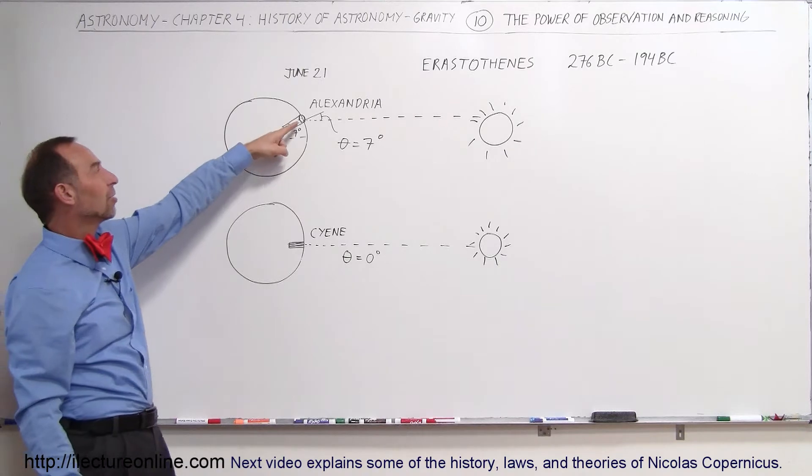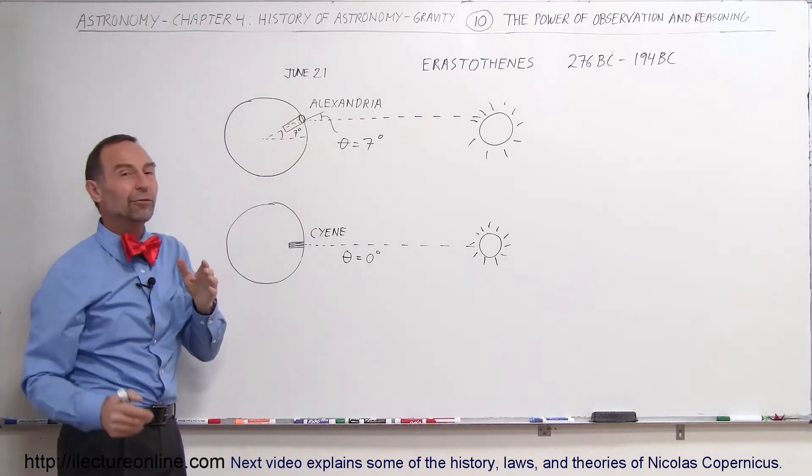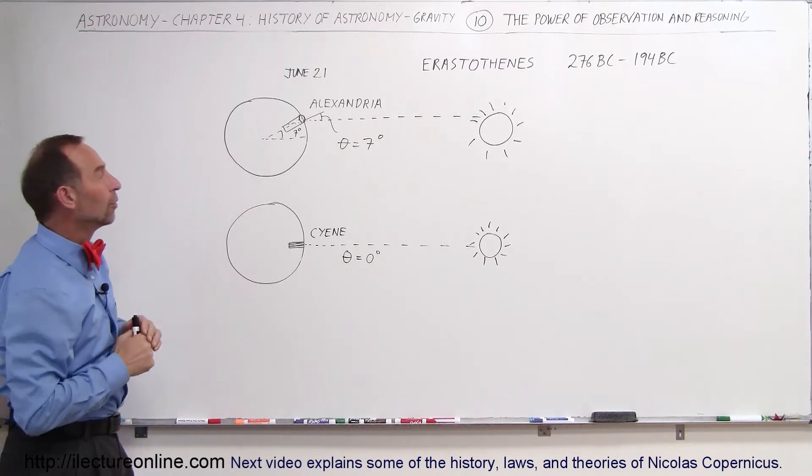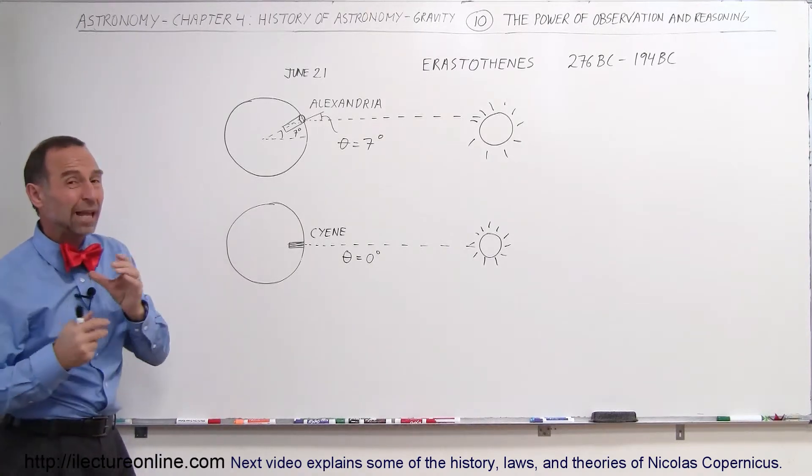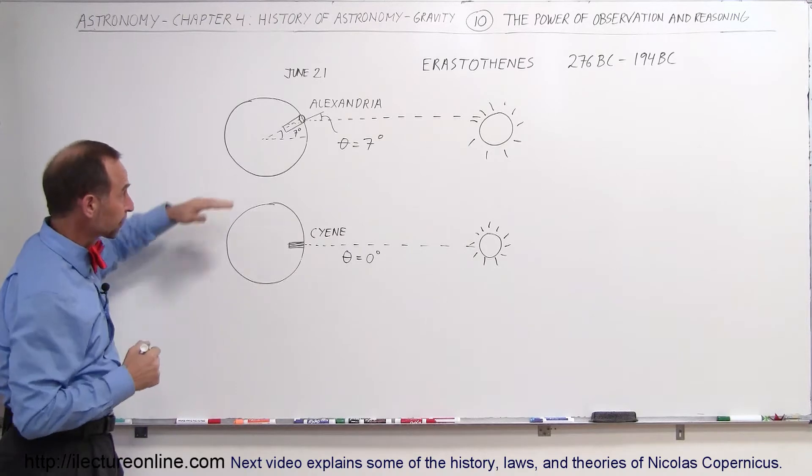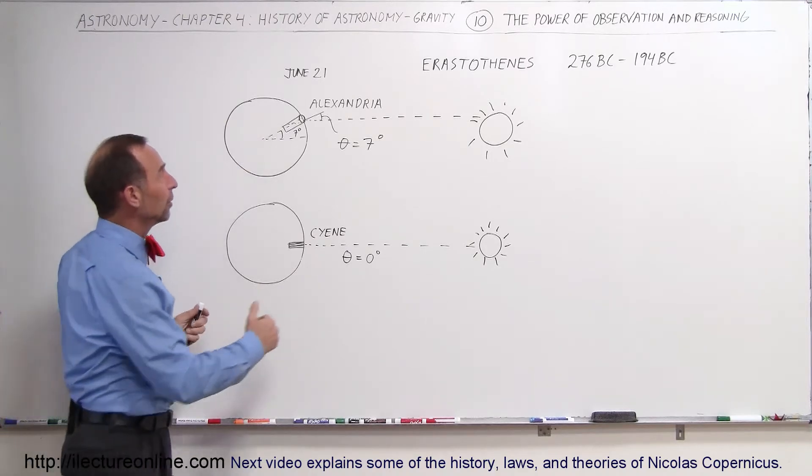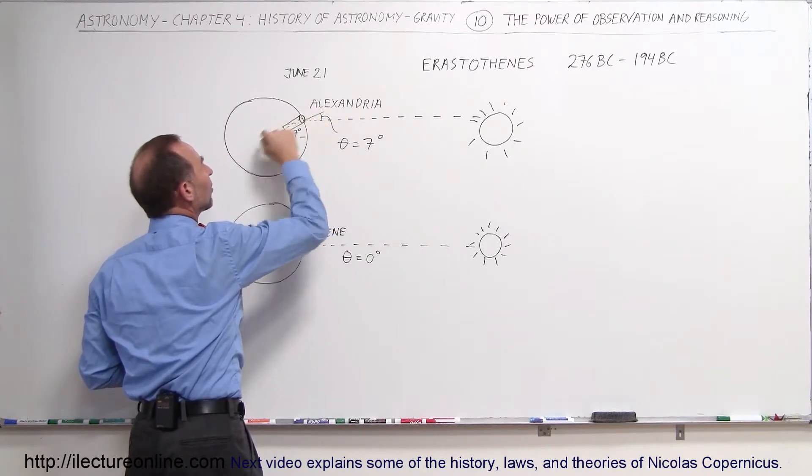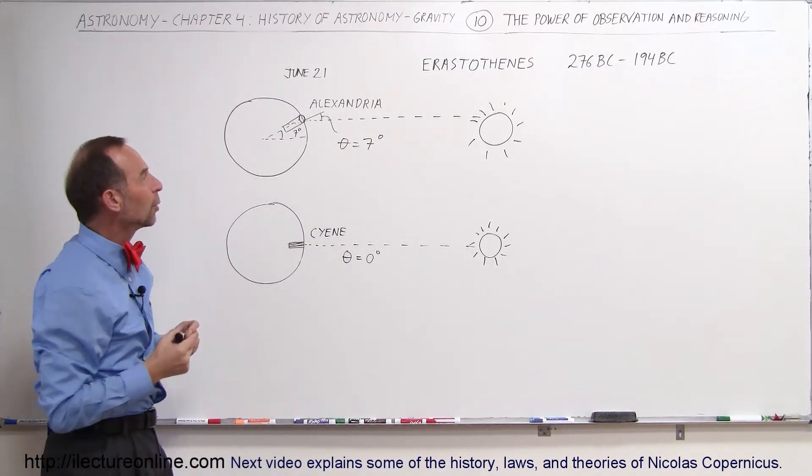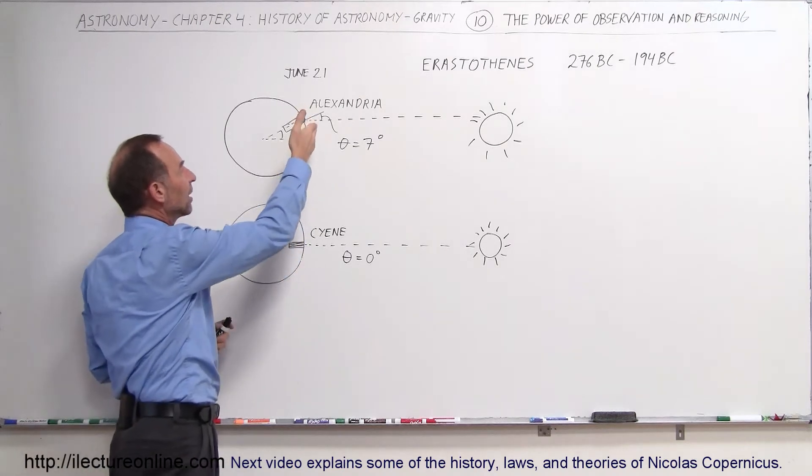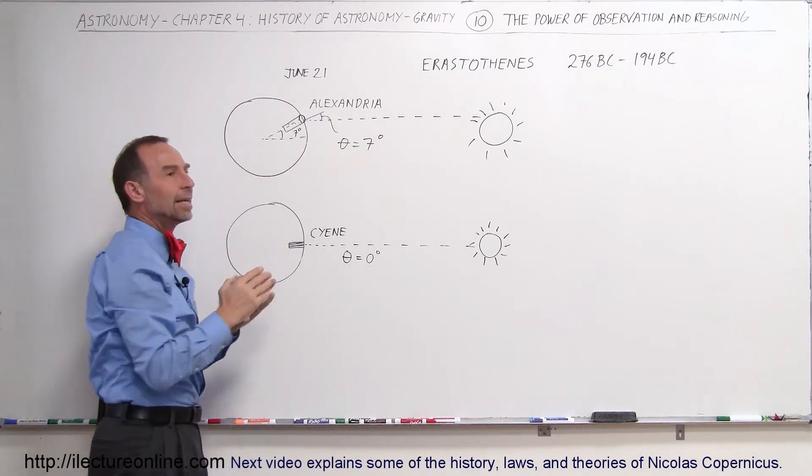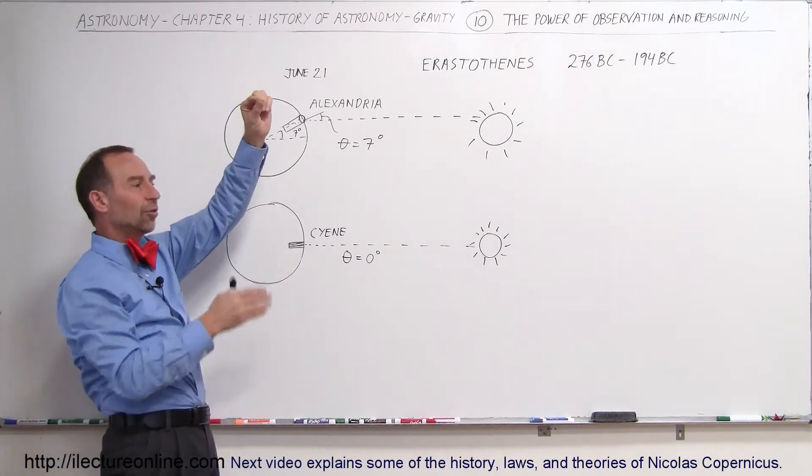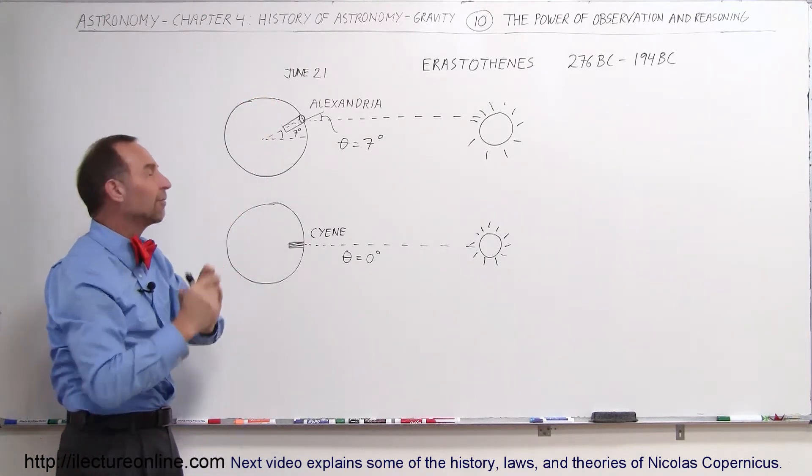He noticed that when he traveled to Alexandria and when he was there on June the 21st, which is the summer solstice, that's when the Sun goes farthest north away from the equator, twenty-three and a half degrees away from the equator. He noticed at that point, when he looked inside a well, he could see how the Sun would then shine in the well and light up the side of the well, but he could not see the bottom of the well. And if you were to take a stick and plant it in the Earth, you could see that the shadow that was cast by the stick would be very short, and the angle made from the tip of the stick to where the shadow ends would be a seven-degree angle.